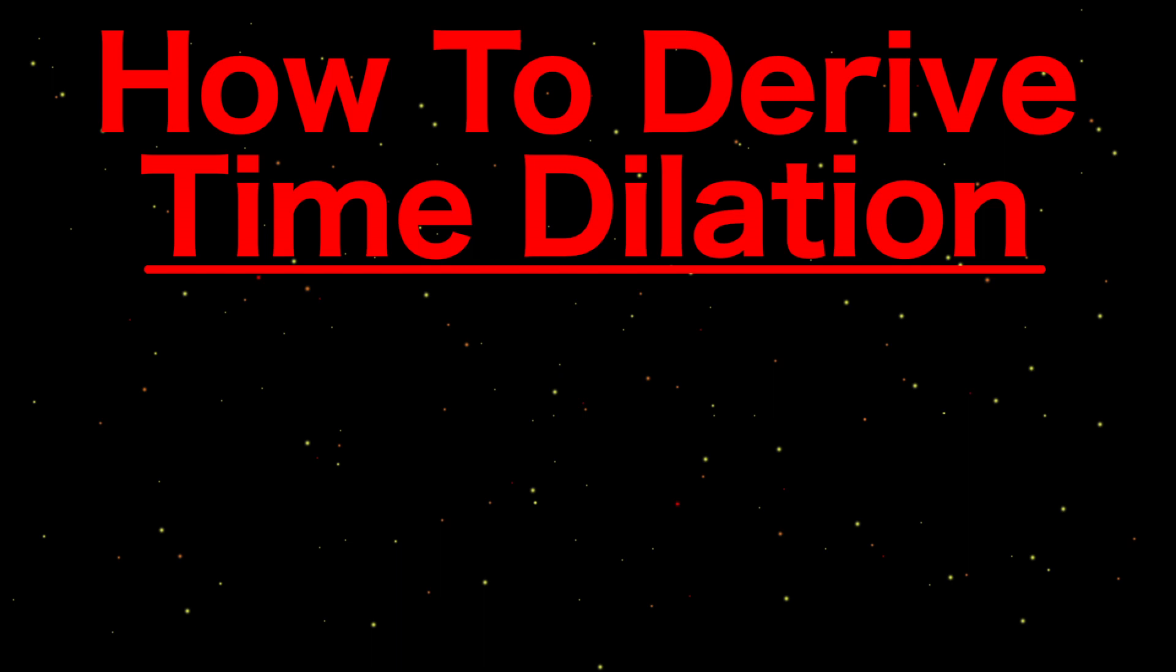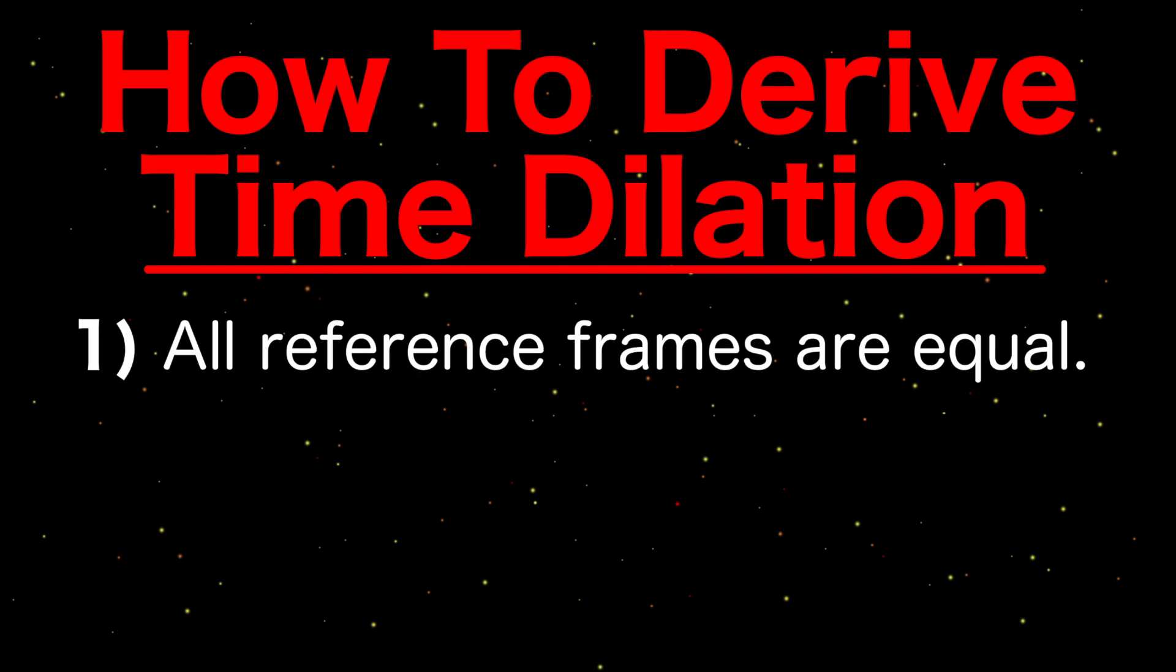With some thought, time dilation can be logically deduced from two simple principles. That all reference frames are equal. In other words, there is no preferred or absolute reference frame. And the speed of light is always constant from every reference frame. This is how Einstein convinced himself and the scientific community.